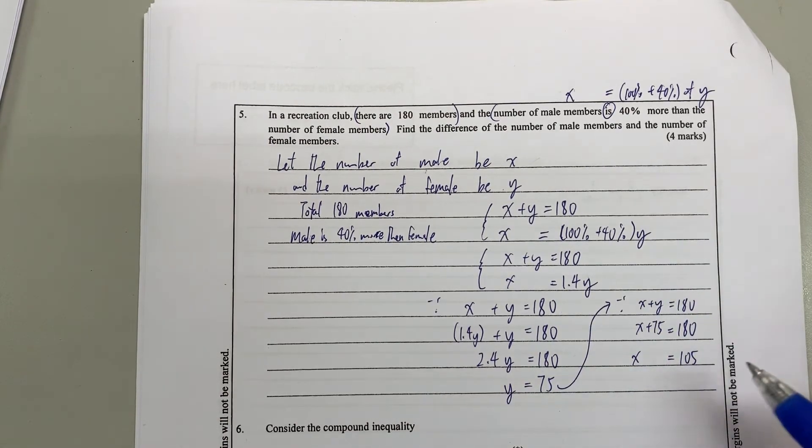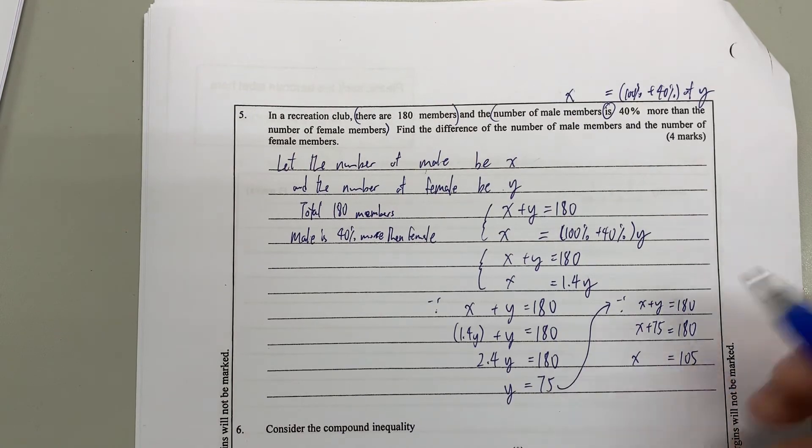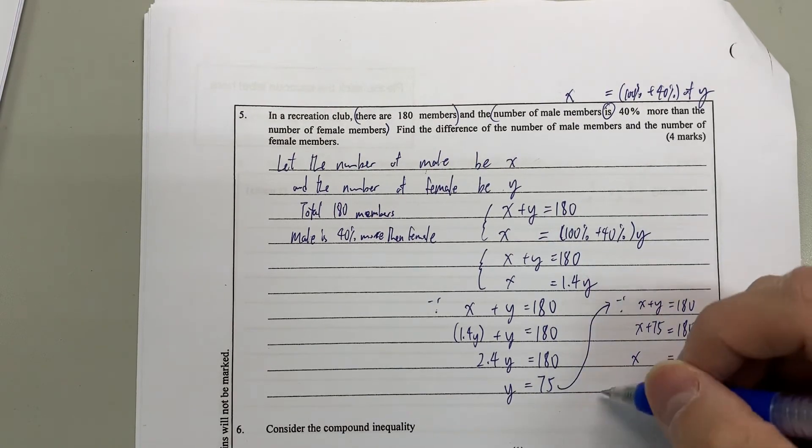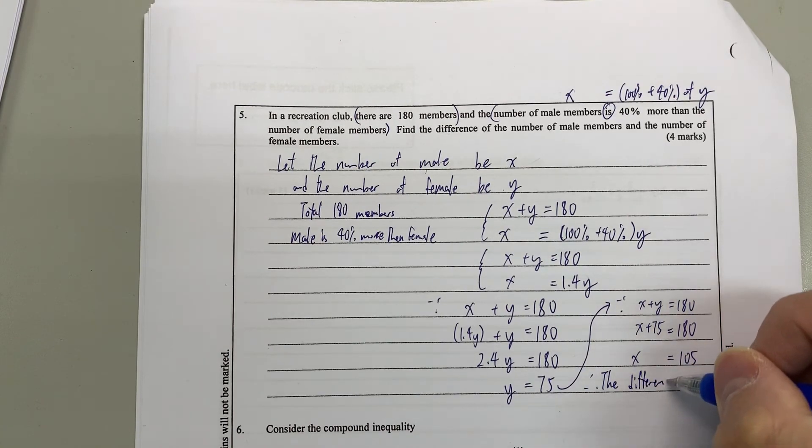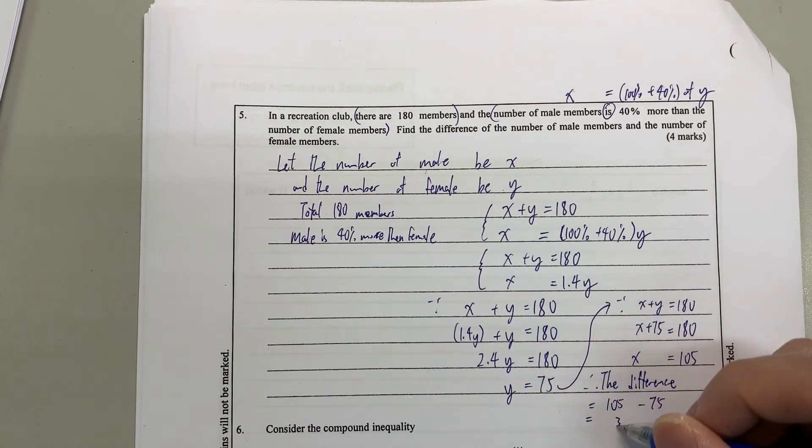So we have 105 male members. And at the same time, we have 75 female members. So the difference equals 105 minus 75, which is 30.